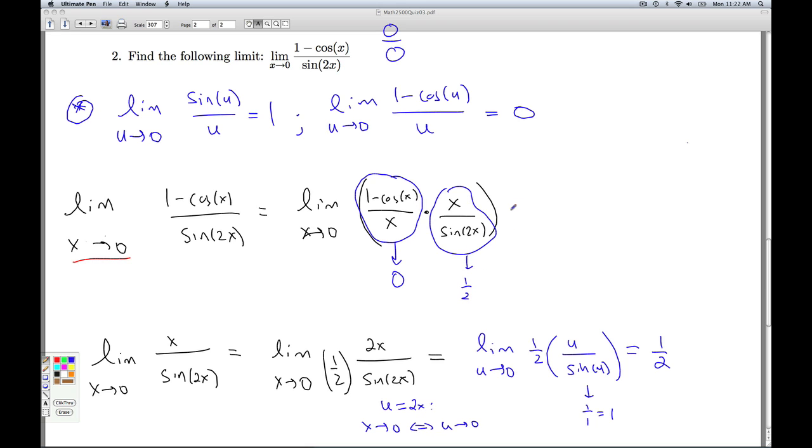So we've just shown that this limit goes to a half. Since both of these limits exist, I can use the product rule for limits and conclude this is 0 times 1 half, which is 0.